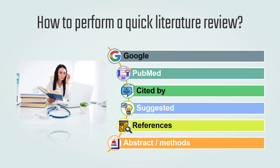I usually start with Google, then go to PubMed, then search for the cited-by and suggested articles — I'll show you what that means in a minute. Then you look at the references of the articles. When doing that, you don't have to read the whole paper. You can just read the abstract, sometimes the methods, to make sure this is something you're interested in or not.